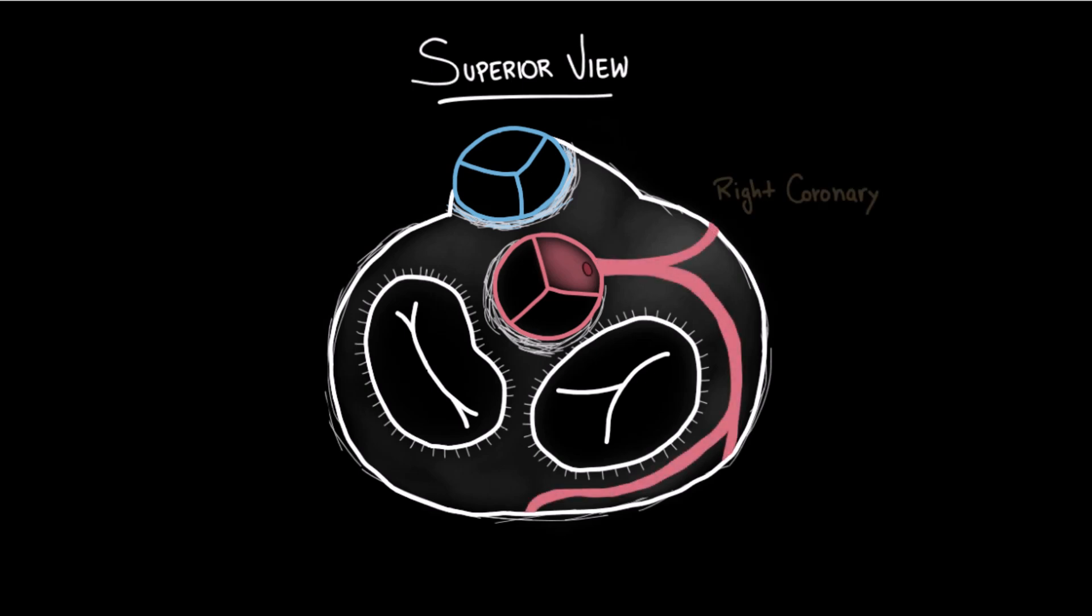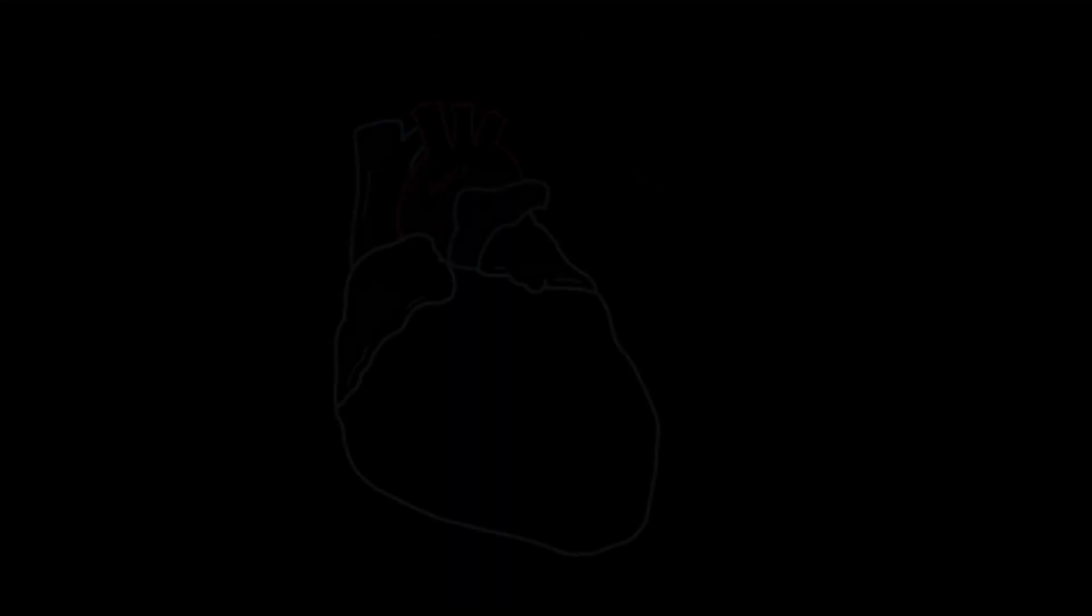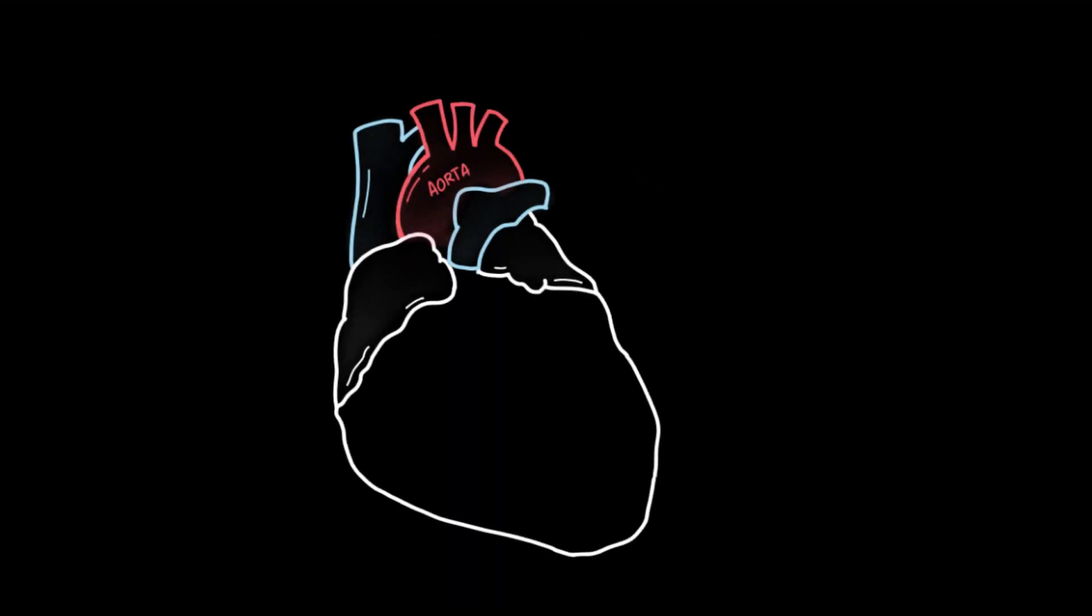And then the right coronary artery travels in direction to the right side of the heart. From an anterior point of view, we can see the right coronary artery leaving the aorta and traveling in the right coronary sulcus.